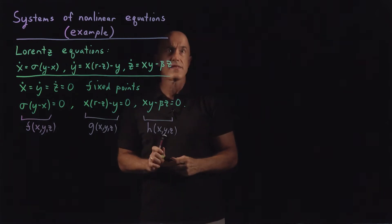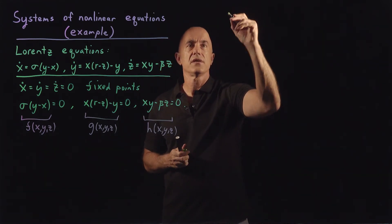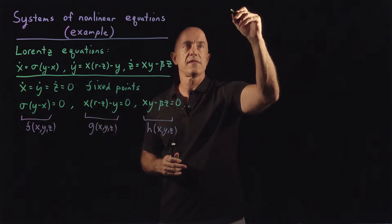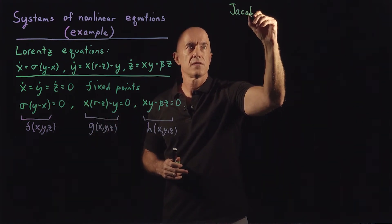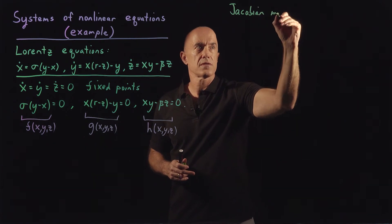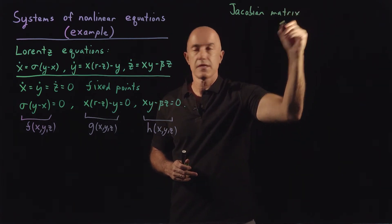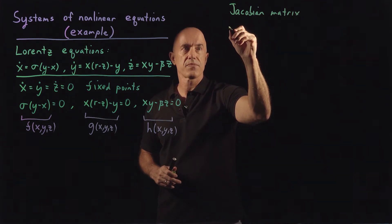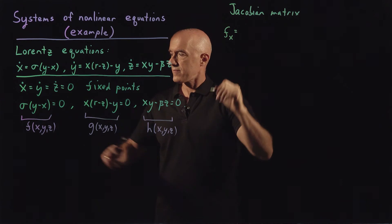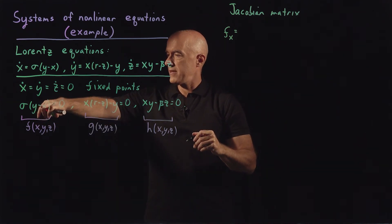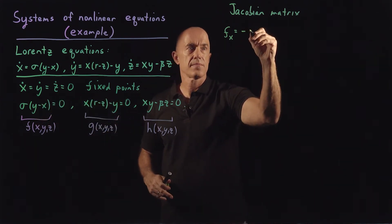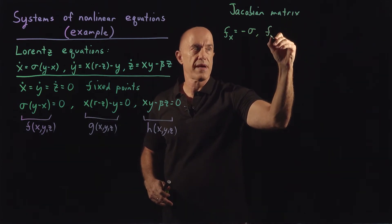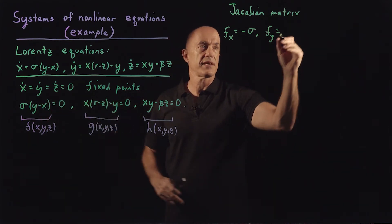Then we need to find the Jacobian matrix. So to find the Jacobian matrix, we need the partial derivatives, so let's do that.